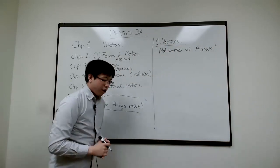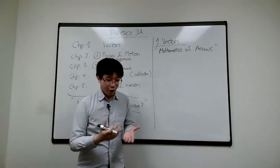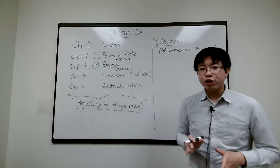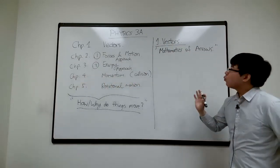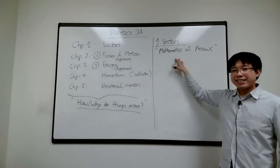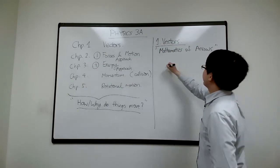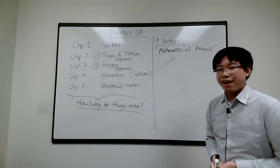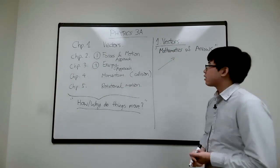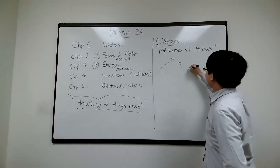You may have heard that vectors have magnitude and direction — that's all true — but I don't want you to forget as we learn all the algebra and complicated things that fundamentally a vector is an arrow. The mathematics of arrows means that if I give you a couple of different arrows, we can build a whole mathematical theory of how to add, subtract, and in some sense multiply them.